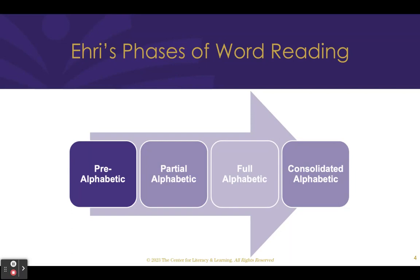Let's dive in. Ehri's four phases of word reading include pre-alphabetic, partial alphabetic, full alphabetic, and consolidated alphabetic. It is important to note that these are phases, not stages. The transition from one phase to the next is gradual, so at any one point in time, a child may be using more than one type of connection as identified by the phases.